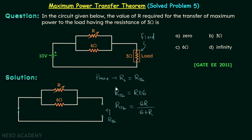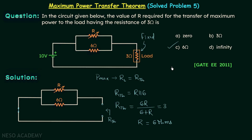Following this result, maximum power will be transferred to RL when RL equals Rth. So RL, which is 3 ohms, should equal 6R divided by (6 plus R). Simplifying, we get R equal to 6 ohms. Matching with the options, option C appears correct. Now we will move on to the verification of this answer.